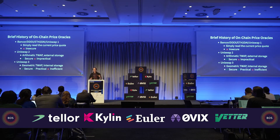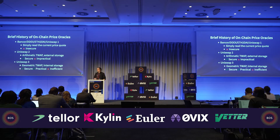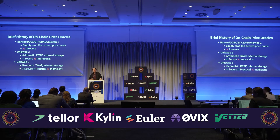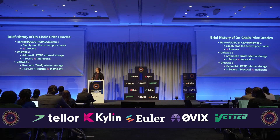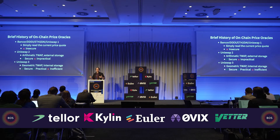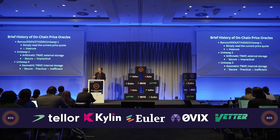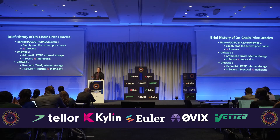Let me give a brief history of on-chain pricing oracles as I see it. The very simplest thing you could do is read a price on-chain — get a quote from Uniswap, how much does a token cost, and use that. That is horrendously insecure, for a reason we'll talk about in a second. The first solution was Uniswap 2, which introduced the TWAP, time-weighted average price. That helps a lot. There are some small downsides about how the TWAP is actually done — it's arithmetic mean instead of geometric, which was addressed by Uniswap 3 — but overall it's quite secure.